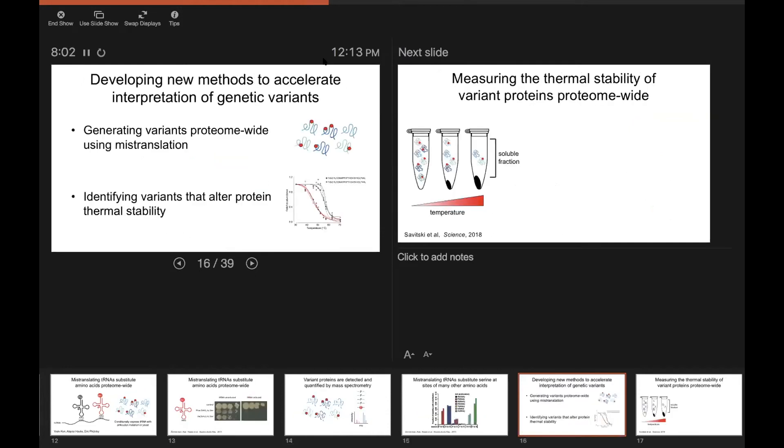So now that we have these pools of protein variants, what we actually want to know is which ones of these are affecting function. So next I'm going to talk to you about how we can use selections to identify variants that alter protein thermal stability.